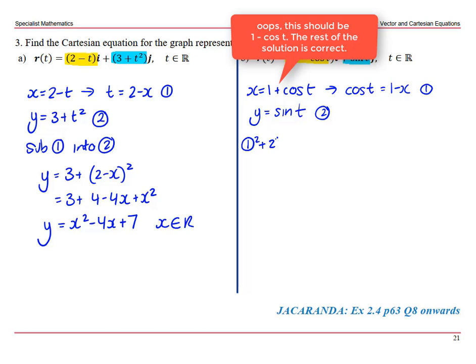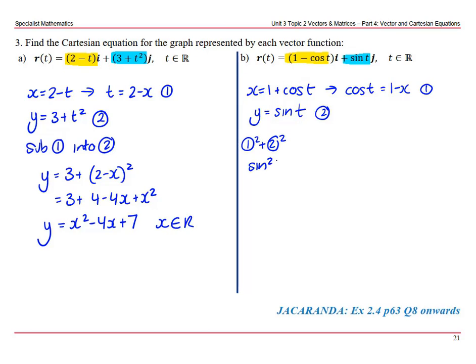If we square them both and add them, we'll get sine squared t plus cos squared t equals y squared plus (1 minus x) squared. We have our identity, so 1 equals y squared plus, expand our brackets, 1 minus 2x plus x squared. Rearrange to get y squared on its own, and we have y squared equals minus x squared plus 2x. And x would also be an element of the reals.